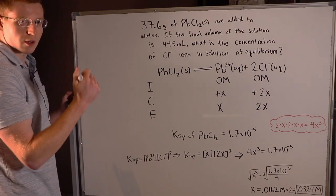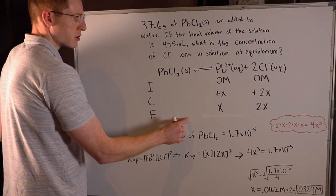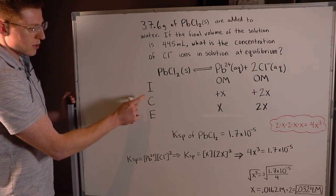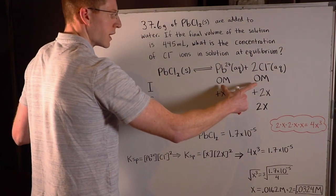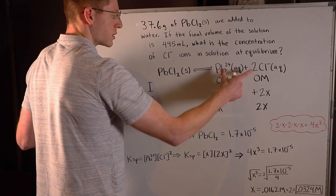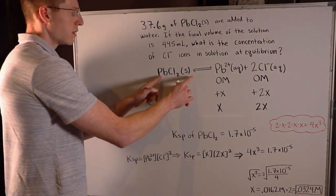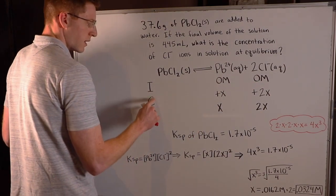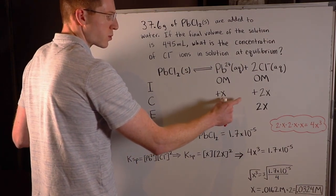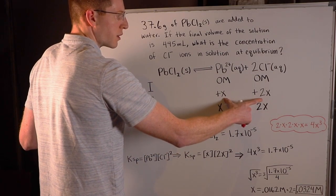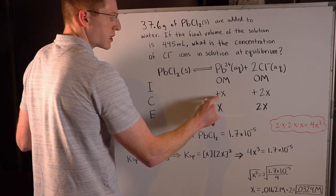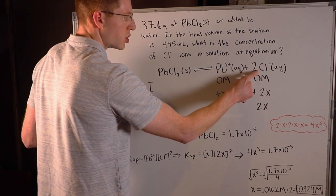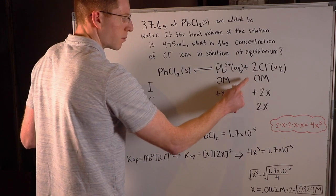Whenever you make an ICE table for an equilibrium reaction, you don't include pure solids and liquids in your calculations. ICE stands for initial, change, and equilibrium. Initially we had no dissolved ions — we assume we started with all solid undissolved lead chloride, so we have zero molar concentrations in the initial state. For the change row, you always use X terms and make them positive for your dissociated ions: plus X for lead and plus 2X for chloride, because of the coefficients of one and two respectively.